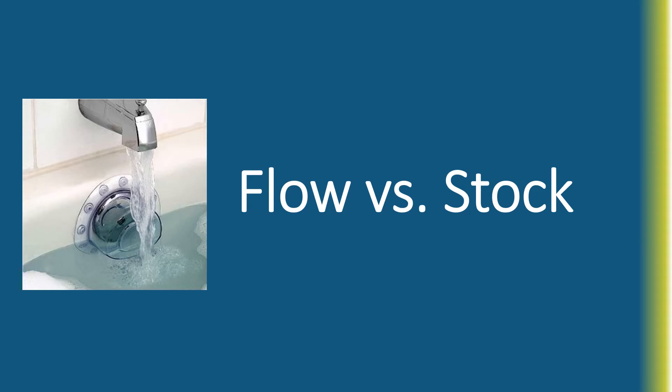One metaphor that helps you understand what GDP is, is this difference between a flow and a stock. We can think about this with the filling of a tub of water. The flow is what is coming out of the faucet — it's what's new and coming into the tub. What's currently in the tub is the stock, the stock of water that already exists.